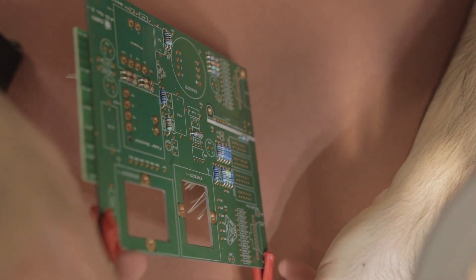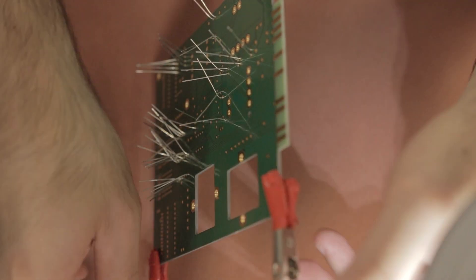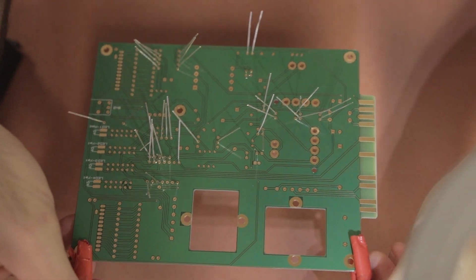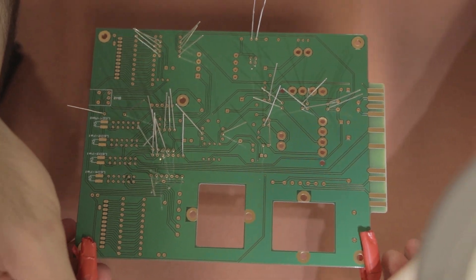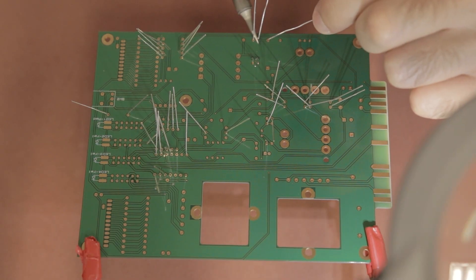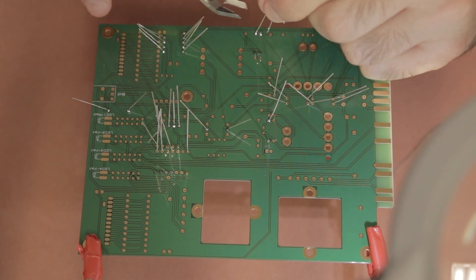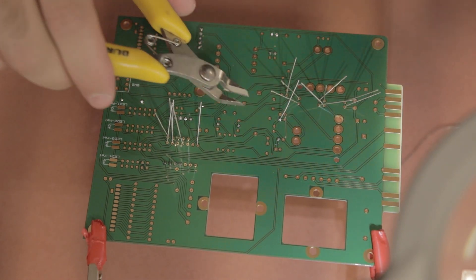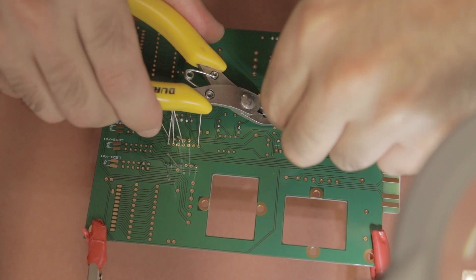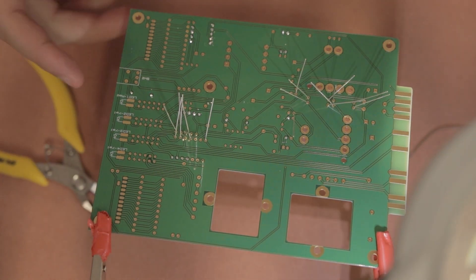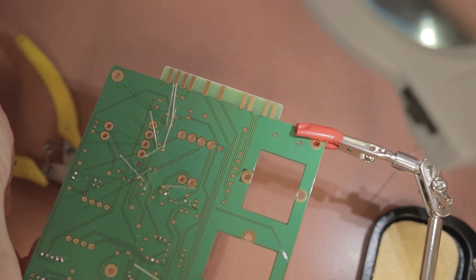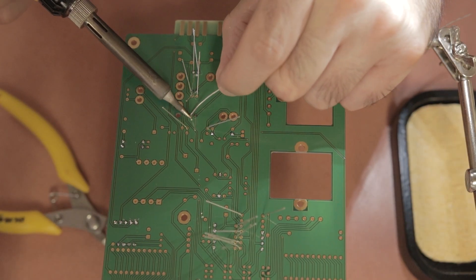Once you've done that first batch of resistors, you can flip the board over and start soldering your legs. As you go through soldering the easiest legs from the outside, you can then snip them and get to the closer ones if you're having any trouble getting to those particular components. Once you've finished all of them, make sure you've snipped all the legs nice and neat.